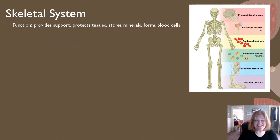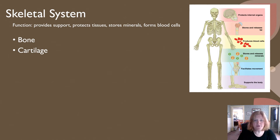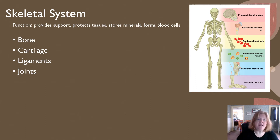Next, the skeletal system. The skeletal system provides support, protects your tissues, stores minerals like calcium and phosphorus, and forms blood cells inside the bone marrow. The skeletal system includes bone, cartilage which covers the ends of your bones, ligaments attaching bone to bone, and joints.